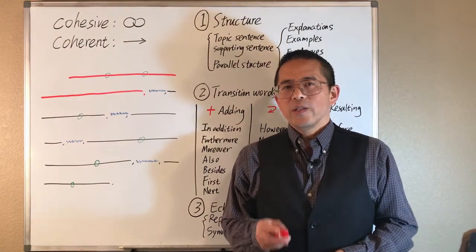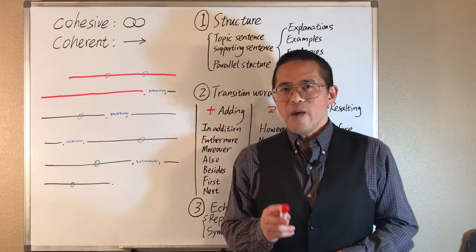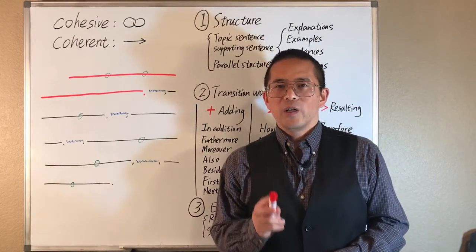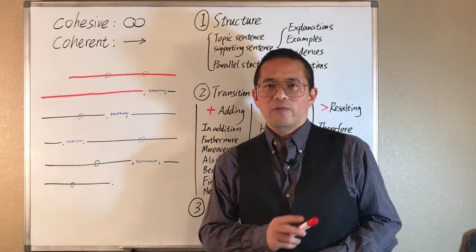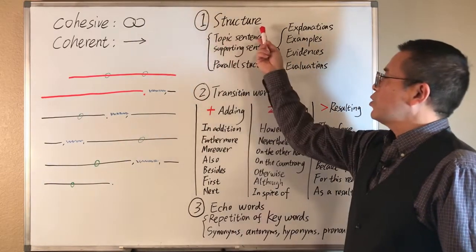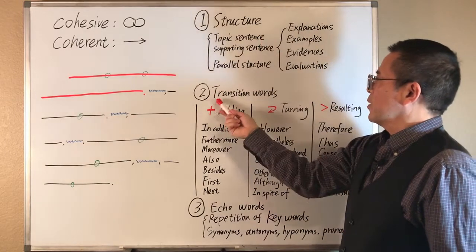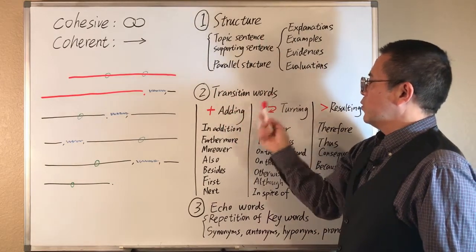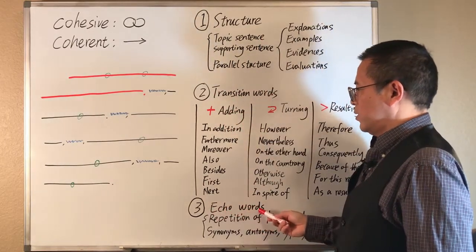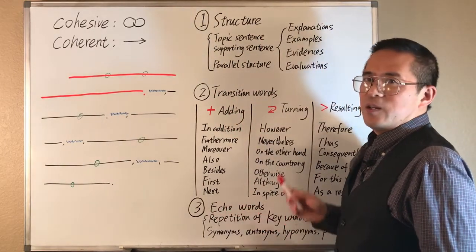Generally, there are three methods we can use to develop a coherent paragraph. They are structure, transition words, and echo words.